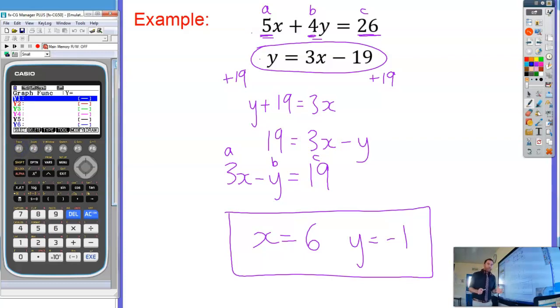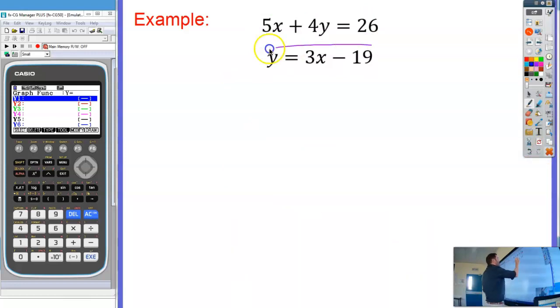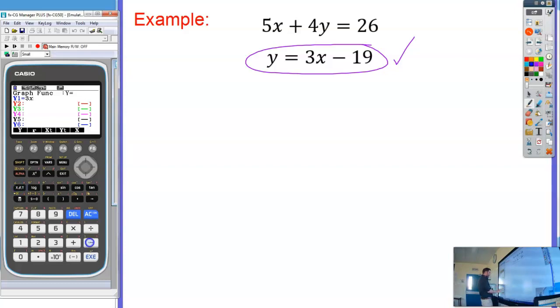This time the calculator does not want it in this form AX plus BY equals C. The calculator needs it in the form Y equals. So this time, let's just clear all that. This time this is the form we want it in. That one's fine. I can put 3X minus 19, so Y equals 3X minus 19.